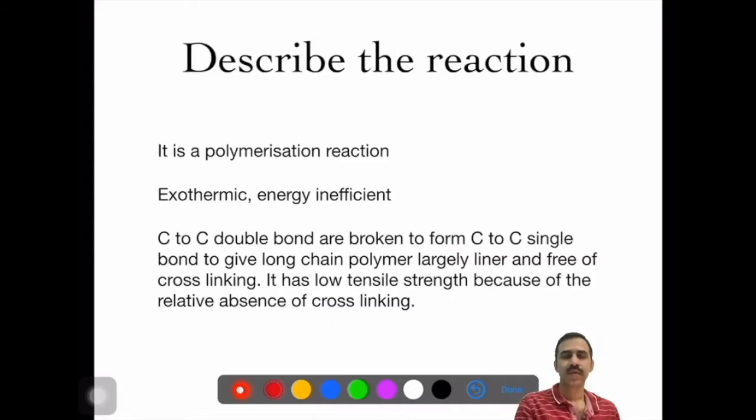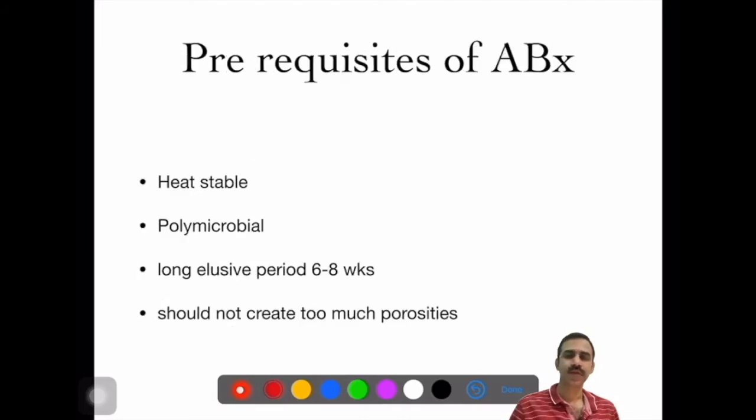If we go back to the first slide, we can see what is happening in the polymerization reaction. It is an exothermic, energy-inefficient reaction. The carbon-carbon double bonds are broken down to carbon-carbon single bonds to give long-chain polymer, largely linear and free from cross-linking. There's no tensile strength because of this relative absence of cross-linking. If you are using antibiotic, it should be heat stable, polymicrobial, have a long elution period of six to eight weeks, and should not create too much porosity within the bone cement, reducing mechanical properties.